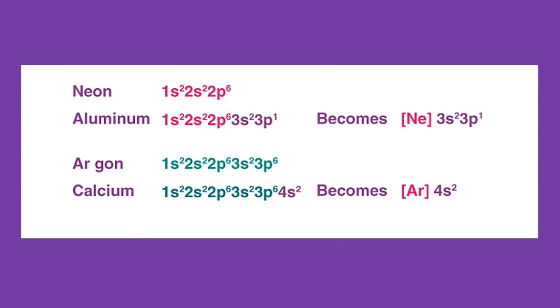However, the standard notation often yields lengthy electron configurations, especially for elements having a relatively large atomic number. In such cases, an abbreviated or condensed notation may be used instead of the standard notation.